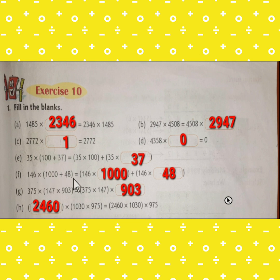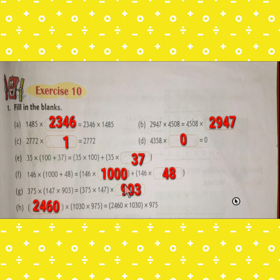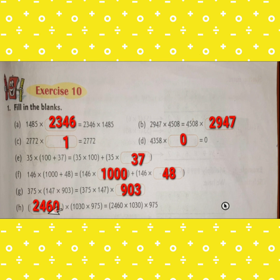Again using the distributive property: 146 is multiplied by 1000 first, so we fill in 1000; then 146 is multiplied by 48, so we fill in 48. Using the associative or grouping property: the missing third number is 903, so we fill in 903. For the next associative property question, the missing A value is 2460, so we fill in 2460.